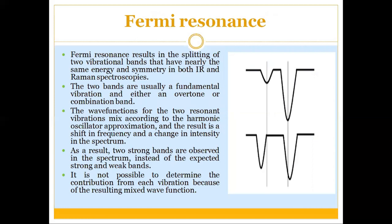Fermi resonance results in the splitting of two vibrational bands that have nearly the same energy and symmetry, in both IR and Raman spectroscopies. The two bands involved are usually a fundamental vibration and either an overtone or combination band. Conventionally, the fundamental vibration appears as a strong peak and the overtone or combination band appears as a weak peak.